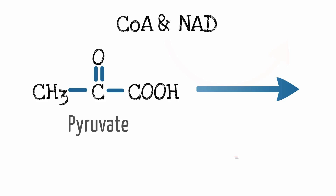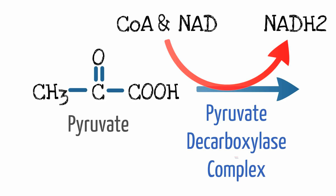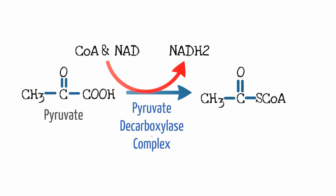If you remember, after the end of glycolysis, pyruvate is converted by the pyruvate decarboxylase complex to acetyl-CoA and carbon dioxide. In the process, an NAD molecule picks up a hydrogen with the release of another hydrogen atom.